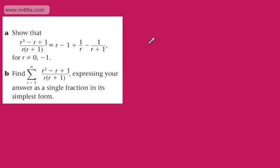This is another example of sum of finite series using the method of differences. In part a, we're asked to show that r cubed minus r plus 1 over r(r+1) is identical to r minus 1 plus 1 over r minus 1 over r plus 1, for r not equal to 0 or negative 1. In part b, we need to find the sum from r equals 1 to n of r cubed minus r plus 1 over r(r+1), expressing the answer as a single fraction in its simplest form.